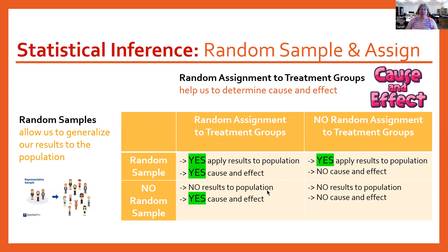The bottom left box: you don't have a random sample, but you do have random assignment to treatment groups. This typically comes up in medical research, where it's difficult to get a random sample because patients need to be close to where the treatment is occurring. For a first or simple study, most medical studies fall here — you would be able to get cause and effect, but you can't really apply those results to your population.